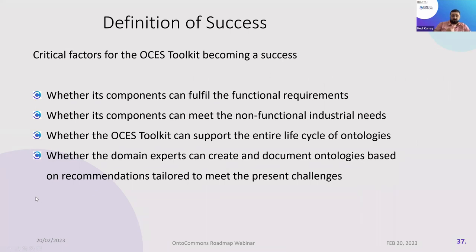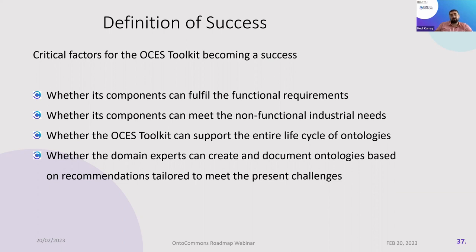The definition of success for the OntoCommons ecosystem toolkit requires services that can fulfill functional and non-functional requirements in terms of components, integration, and support for the entire lifecycle of ontology — from requirements through to use. It should allow domain experts to create documentation of ontologies, document ontologies based on recommendations, and use ontologies to document data. The main recommendations are to refine methodologies and tools especially for ontology validation; provide recommendations on principles, best practices, and methods; provide a methodological approach for coordination among tool providers; leverage an industrial ontology portal for ontology adoption; and create user-friendly tool chains for reference implementation.